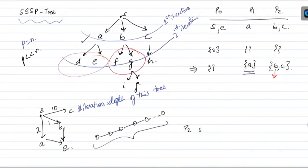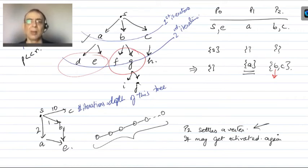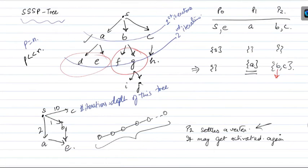Suppose P2 settles a vertex — it may get activated again because we're not doing a single global extraction across all processes; it's a local extraction. The correctness of Johnson's algorithm is based on looking at the globally minimum vertex and settling only that. Now we are trying to settle around P vertices together, so it does not guarantee that all of these are on the shortest path. One out of these definitely will be — the one with the shortest distance — but the others may not be.